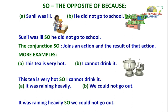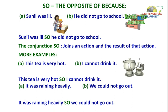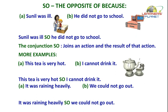The conjunction SO gives us the cause for any action. This is to say, the action is the result of something that has happened. The examples that we saw with the conjunction BECAUSE can be rewritten in the following manner using SO. See and understand.